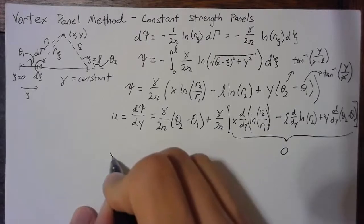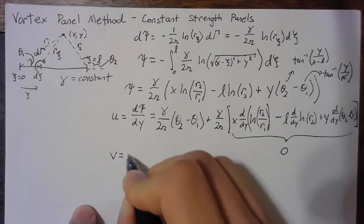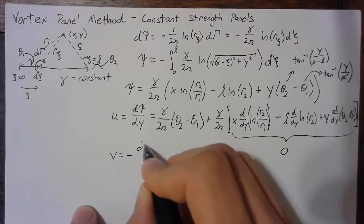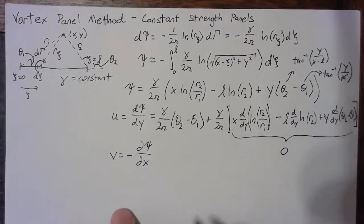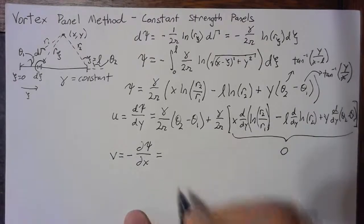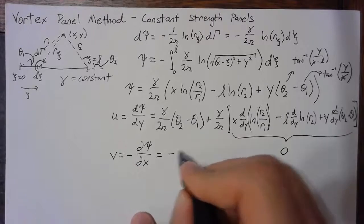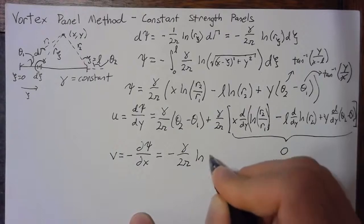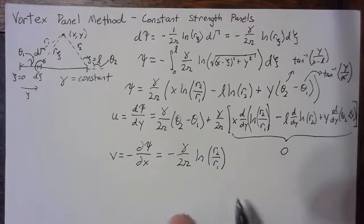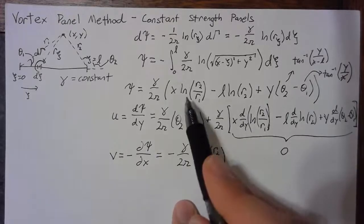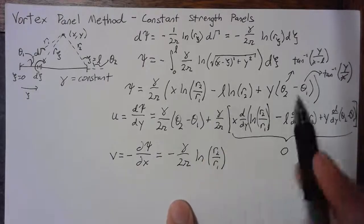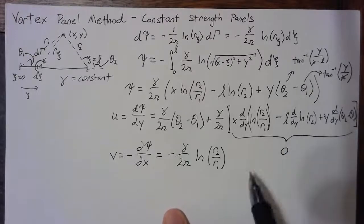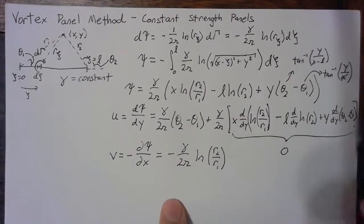We'll do the same thing with v. v is equal to negative d psi dx. The term that we end up with is negative gamma over 2 pi times the natural log of r2 over r1. Once again, there are a lot of other terms from the rest of the psi terms, but they end up canceling out.